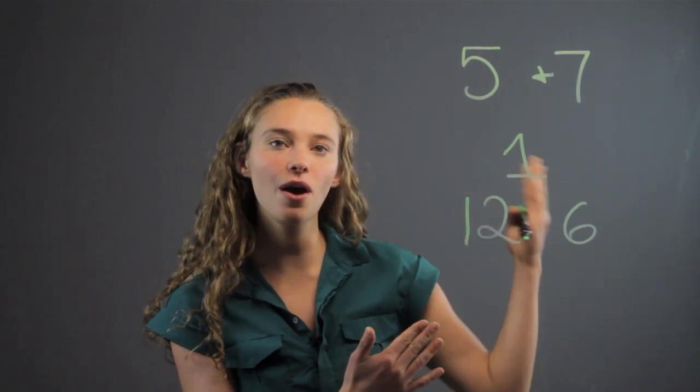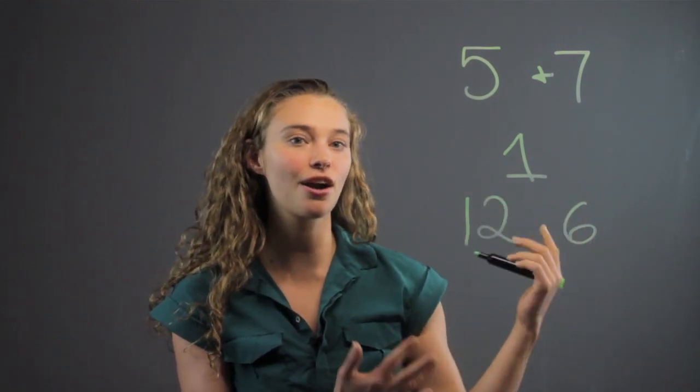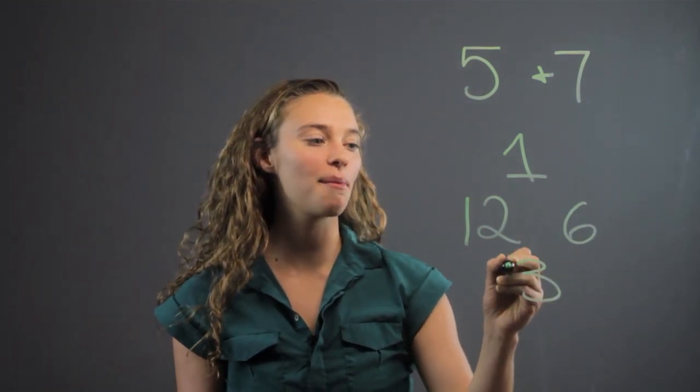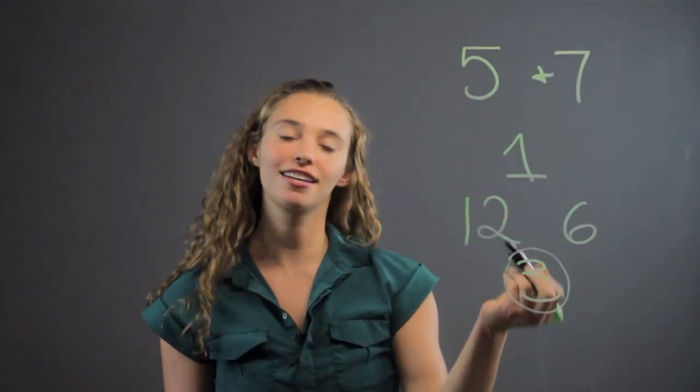And then we can see that no other numbers that are bigger than 3 go into 12 and 6. So that's an example of finding the greatest common factor for 12 and 6. That would be 3.